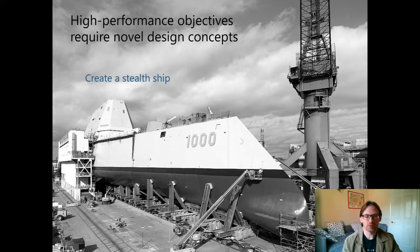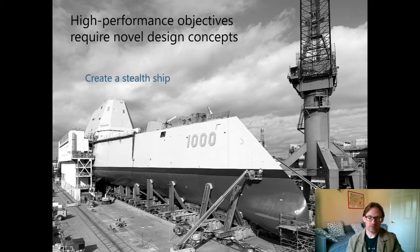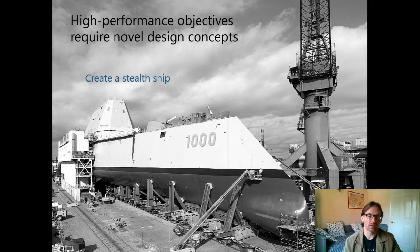Here's another example. So this is the US DDG 1000. It's a naval vessel and the idea here was to make a ship that's actually radar stealth and that's why they had to make everything with these flat panels and straight lines.